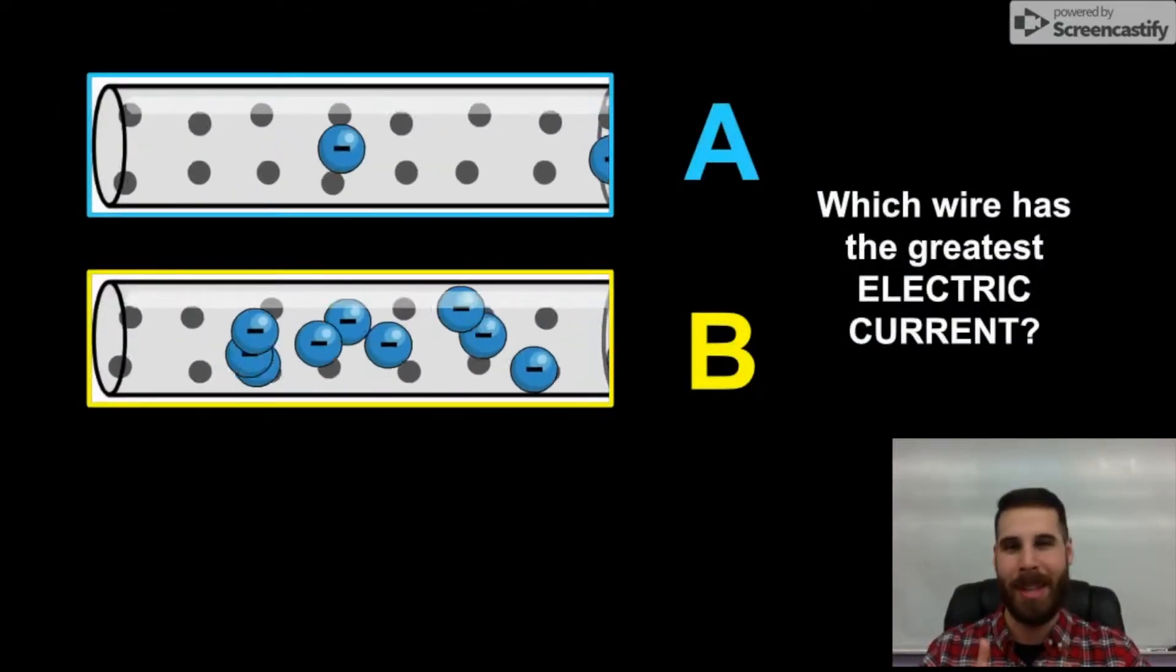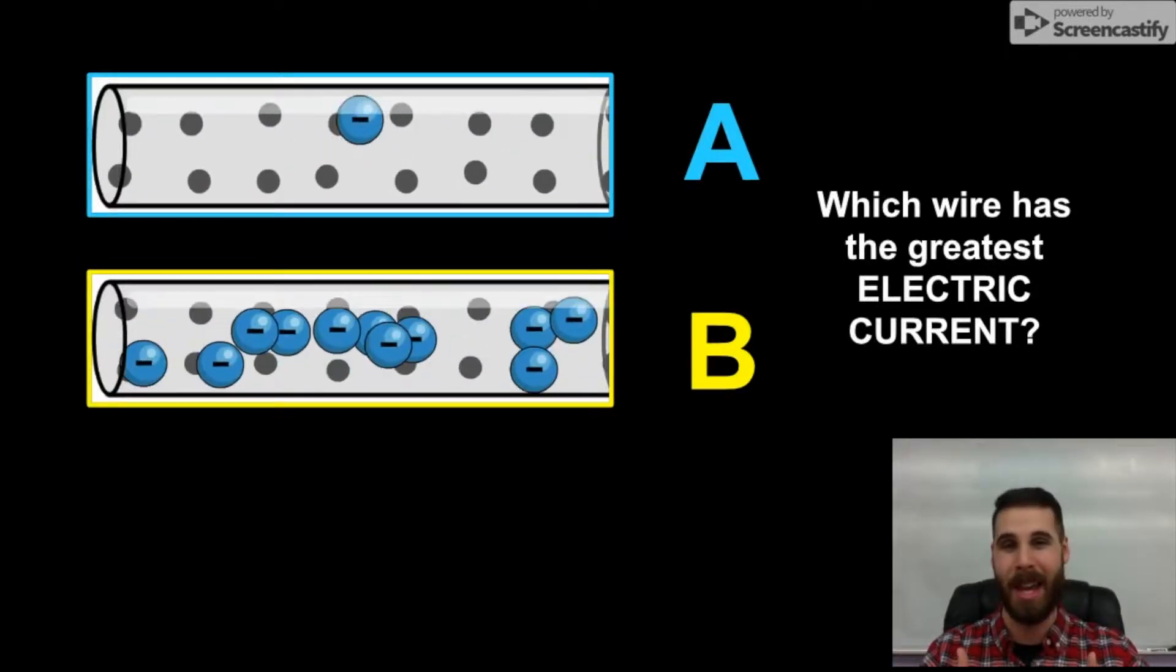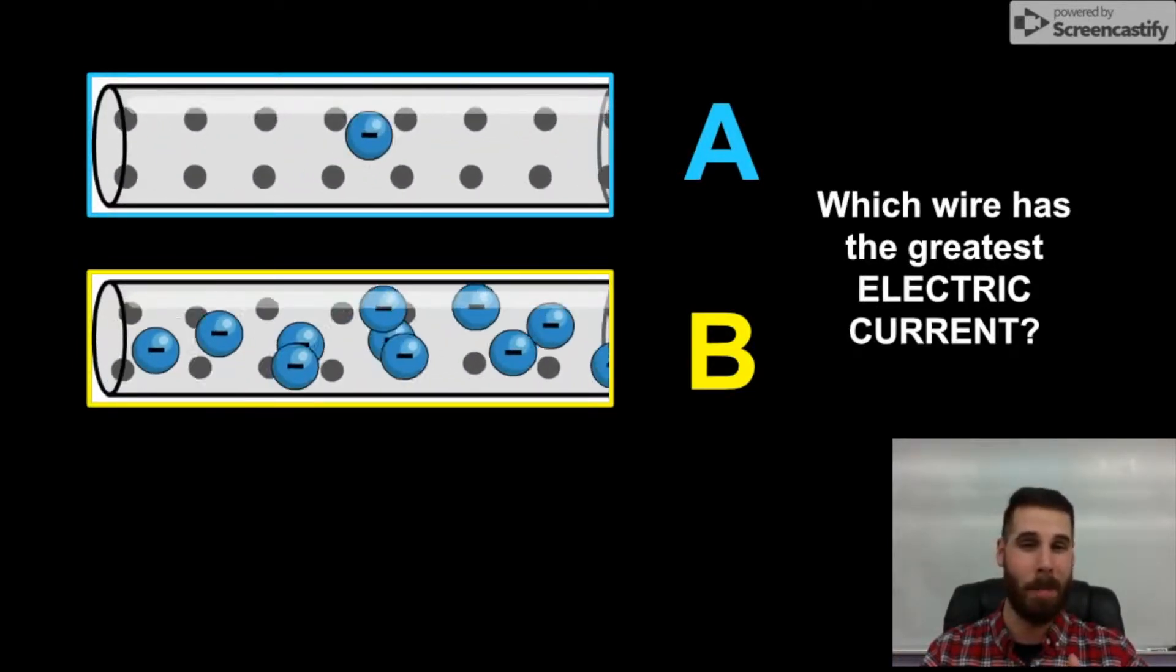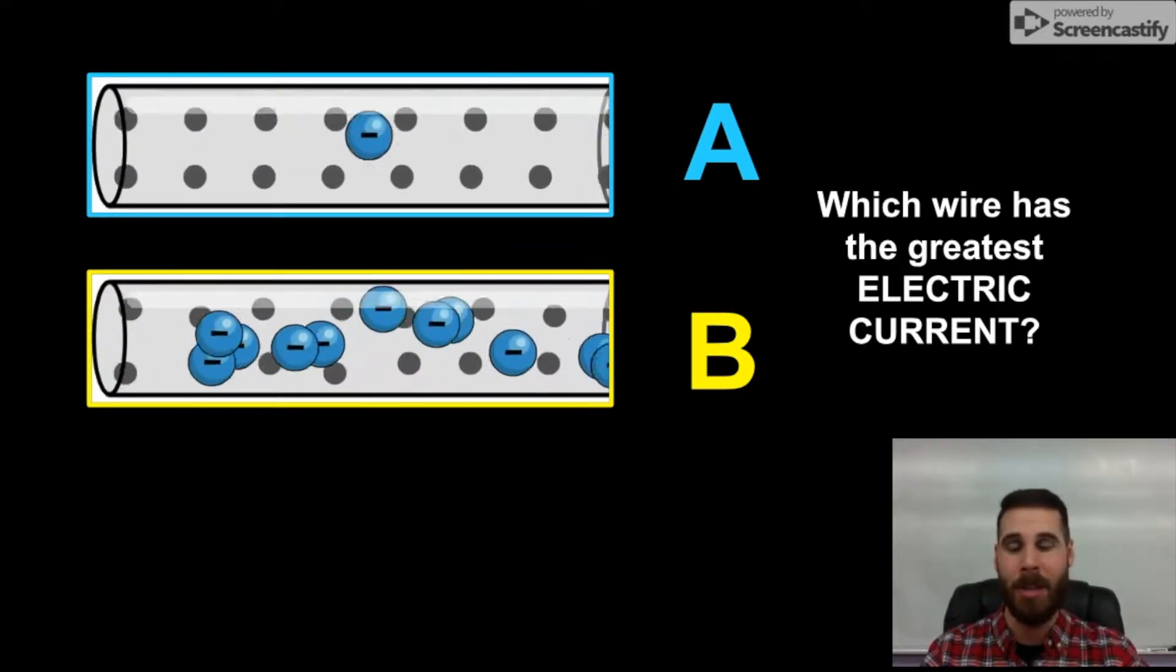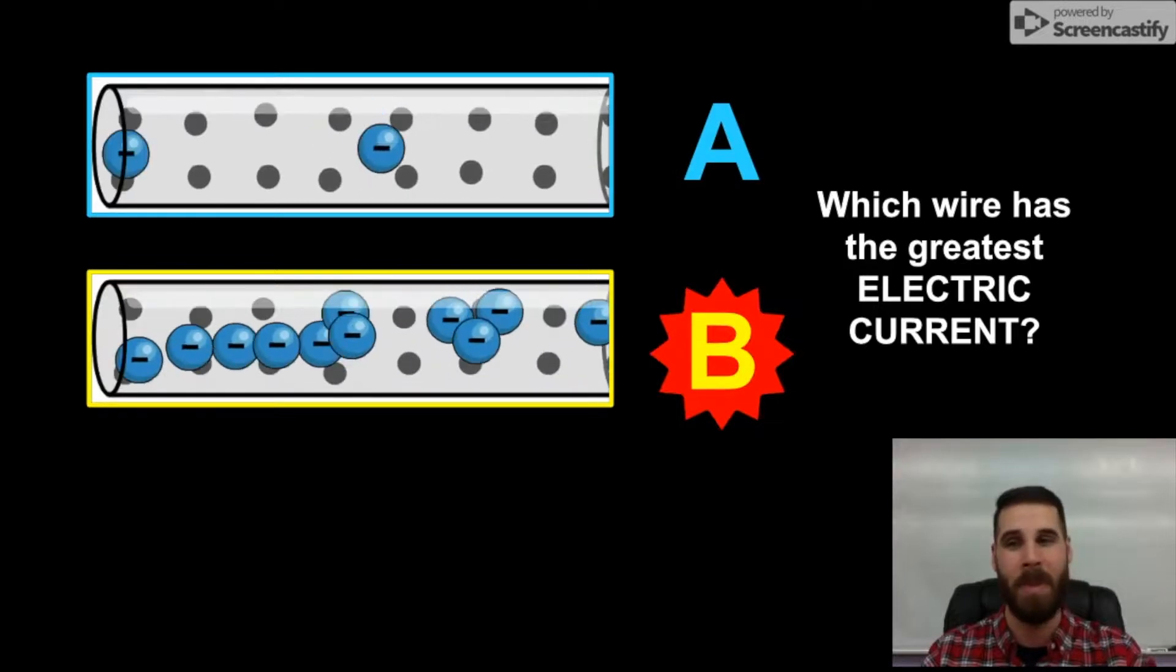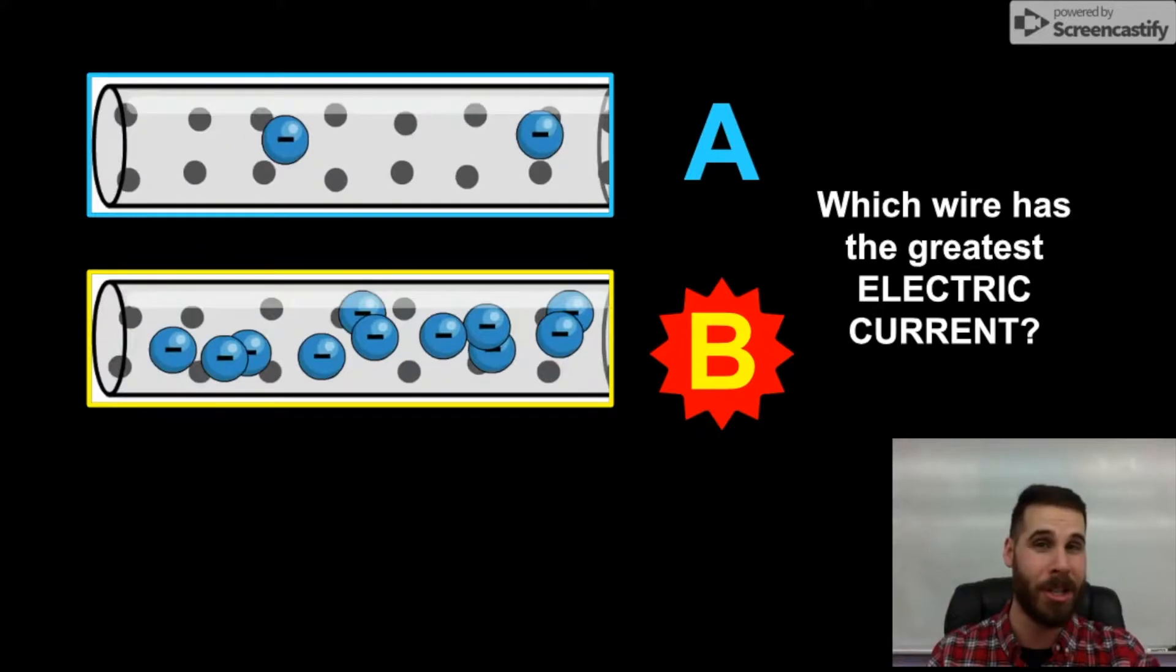If I show you two different wires with two different amounts of current and I say, which wire has the greatest electric current? After looking at both of them for a few seconds, A and B, you should be able to figure out that B has more current flow than A. Now that's purely from a visual standpoint. You could guess that, but there's other ways of justifying it too with equations.